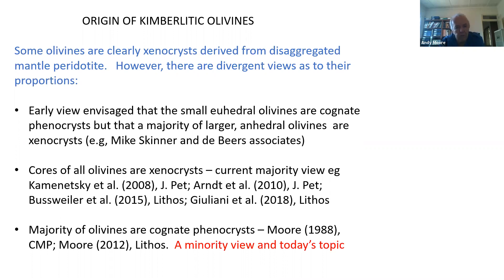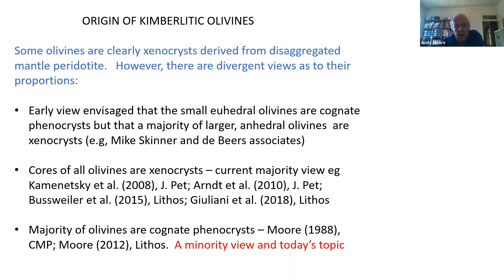I think Mike still holds this view, though I haven't spoken to him for several years. More recently, a consensus has started emerging that all of the olivines are xenocrysts, derived from disaggregated mantle peridotites. What I want to talk about today is the minority view — that the majority of the olivines are in fact cognate phenocrysts. We're talking about majorities, not all olivines.